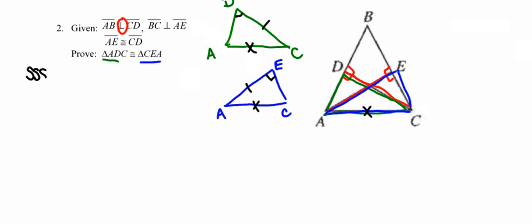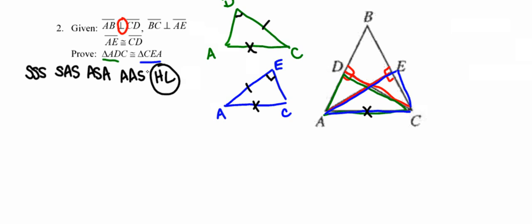Now I'm looking at my five methods of triangle proof — it always has to fall into one of those five categories. It's not SSS, not SAS, and it can't be ASA or AAS because I don't have two pairs of congruent angles. The winner in this case is going to be HL. I've got right triangles formed by the perpendicular lines, along with a pair of congruent hypotenuses AC and a pair of congruent legs AE and CD.